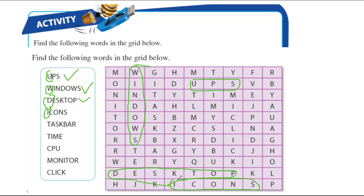Next, 'Taskbar' — T is the first letter. Let's find out where the taskbar is. I found the taskbar here. Next, 'Time' — the first letter is T again. Here is T, I, M, E — time found.